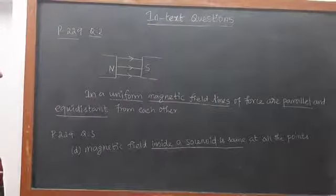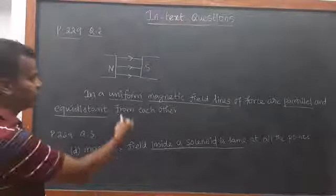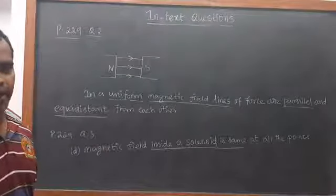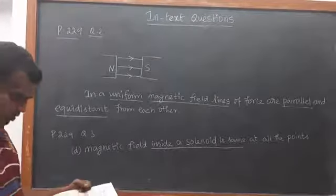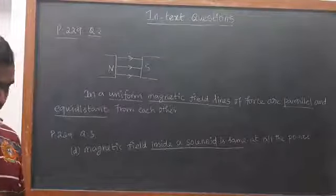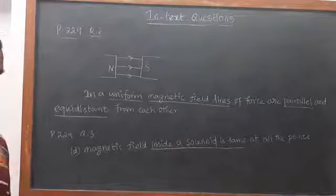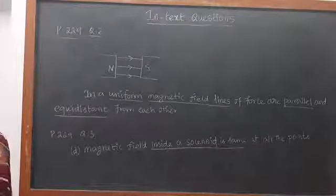Yes, it's clear, right? And here I wrote the uniform magnetic field lines of force are parallel and equidistant from each other, right? And the question number 3 is, choose the correct option, the magnetic field inside a long straight solenoid carrying current.